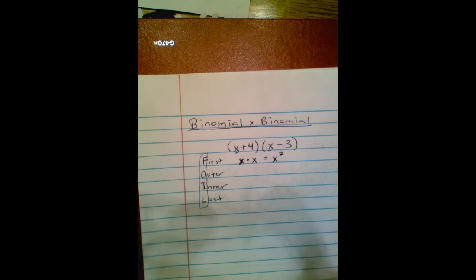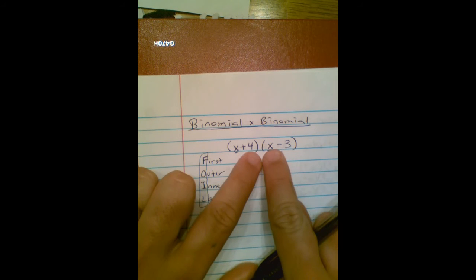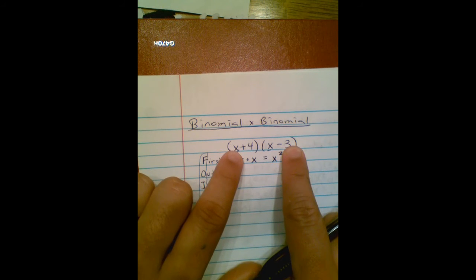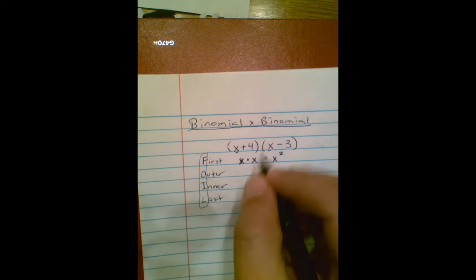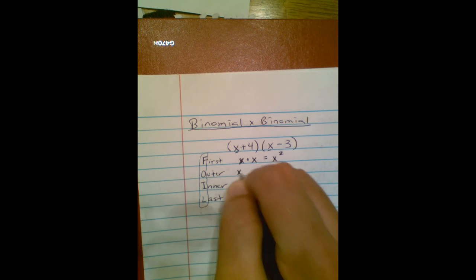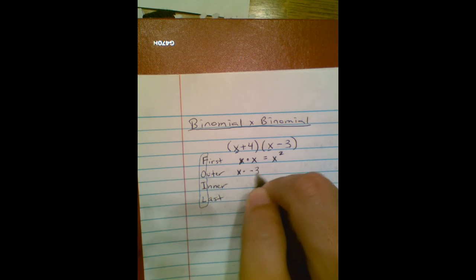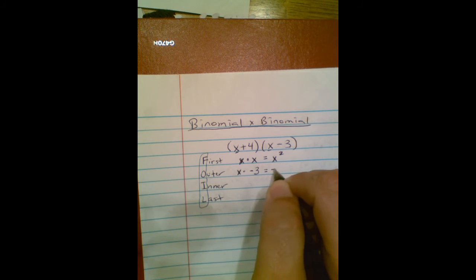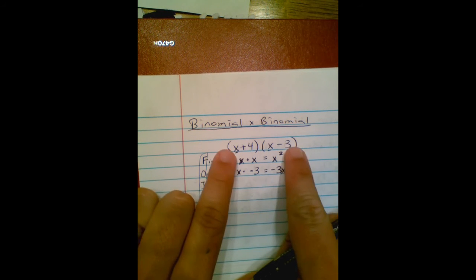Outer terms. I'm looking at this whole thing. I've got two outer terms and two inner terms. The outer terms are x and negative 3. The two inner terms are the 4 and the x. So outer terms: x times negative 3, which is negative 3x. Then inner terms: inner is 4 times x.